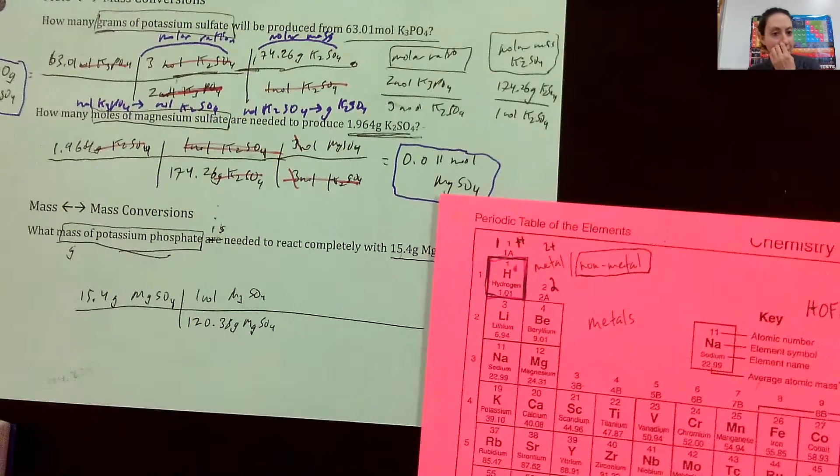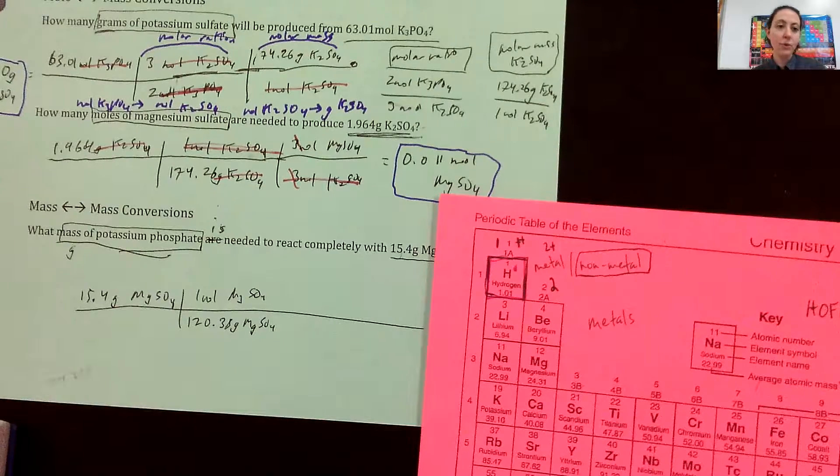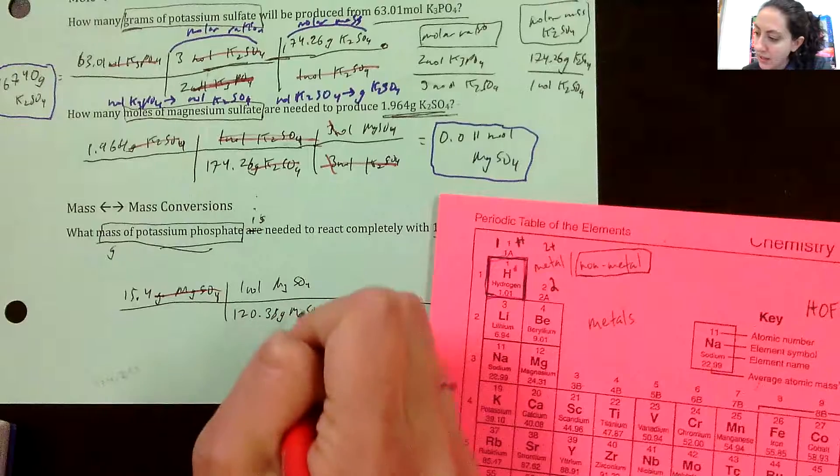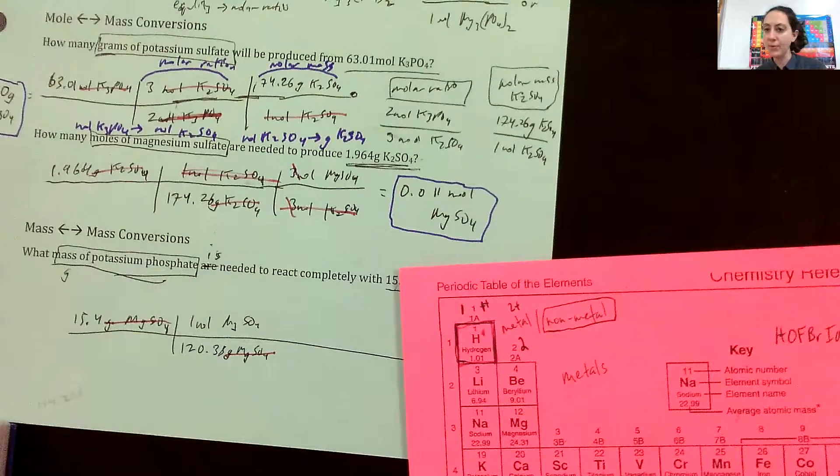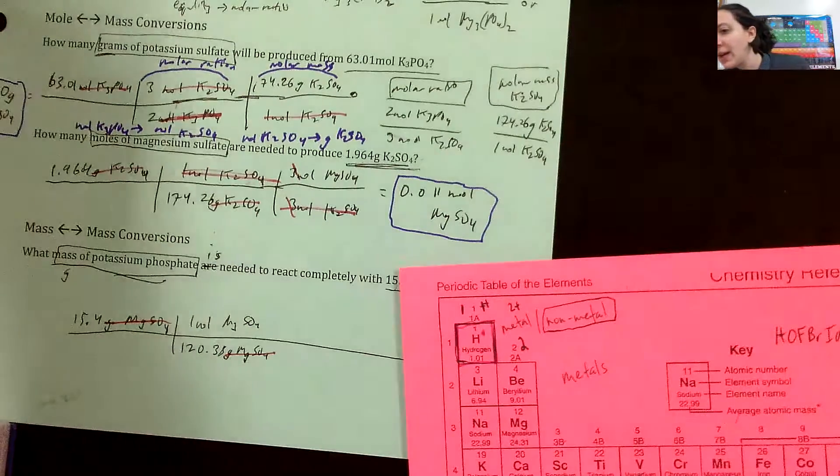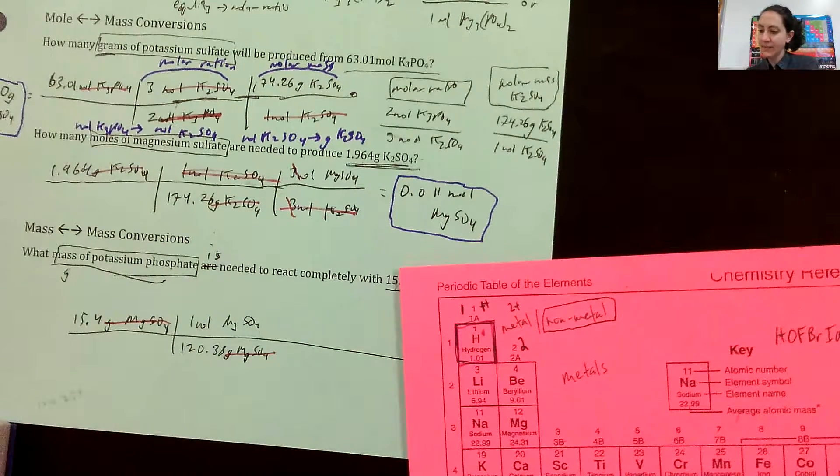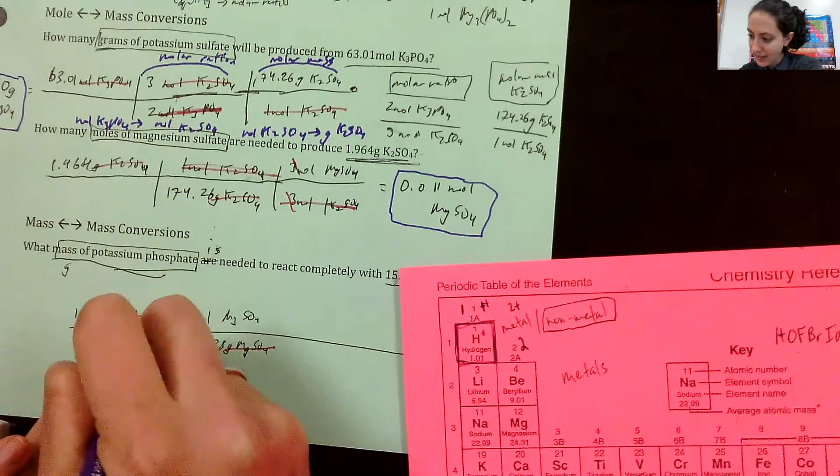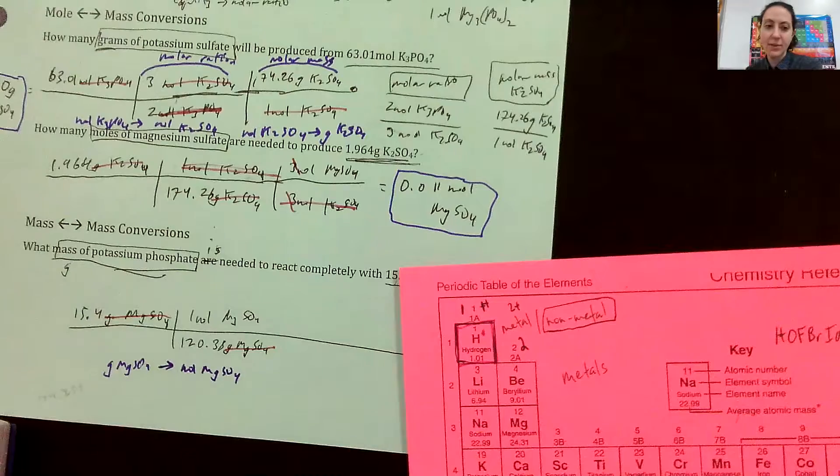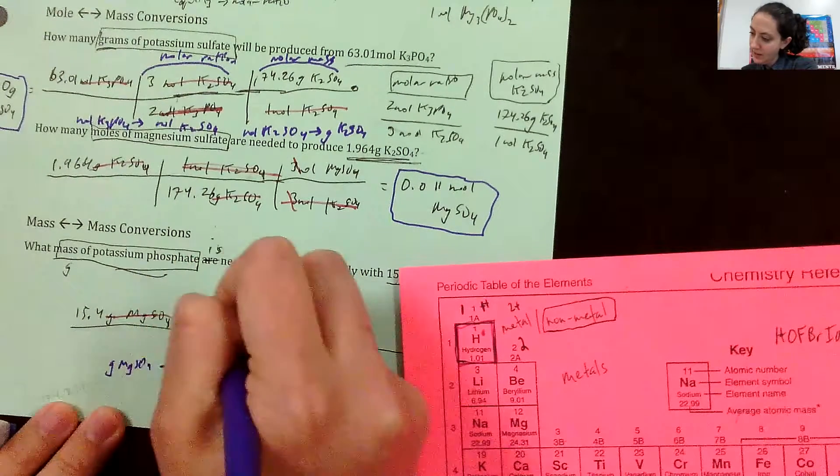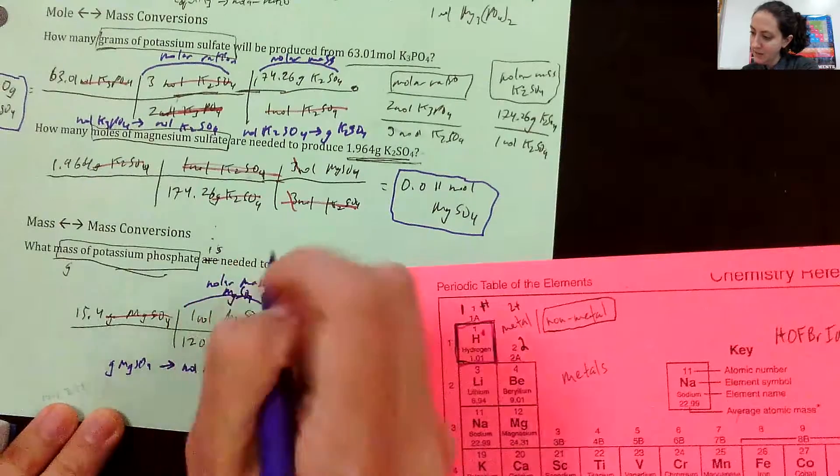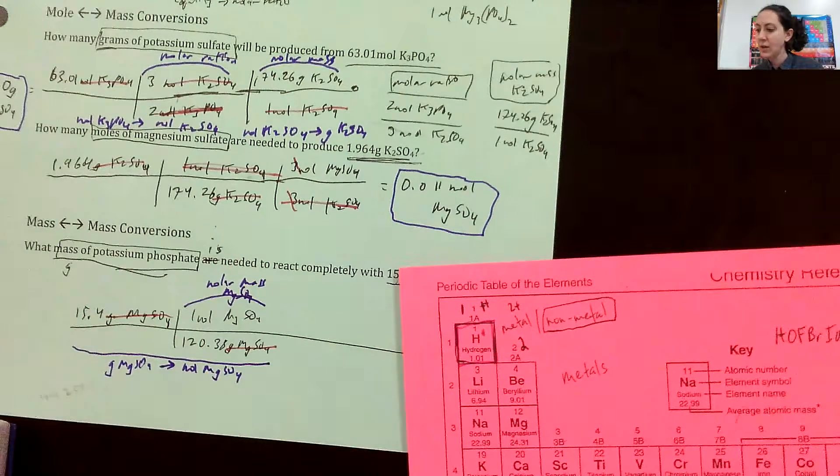So 120.38 grams of magnesium sulfate for every one mole of magnesium sulfate. So this step right here, what we've just done is we have converted from grams of magnesium sulfate to moles of magnesium sulfate. And again, I know that we are going to need to do this because we have to end up with moles to moles. We have to compare moles to moles. This right here, what we've just done in this step is grams of magnesium sulfate to moles of magnesium sulfate. And that is the molar mass of magnesium sulfate in that whole step right here.